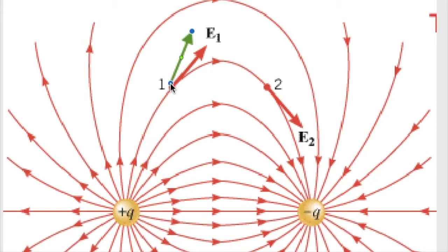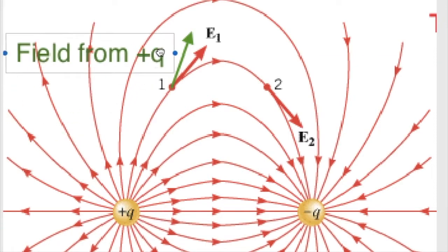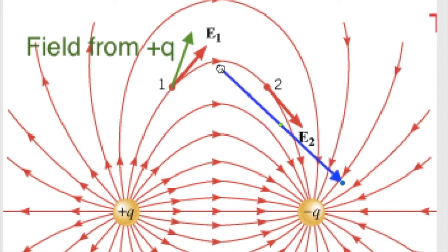Let's say the field at point one caused by the charge on the left is this. Then looking at the field at point one caused by the charge on the right, that'll be a line going directly towards it because it's a negative charge. So let's say that the field caused by the negative charge is this blue line right here.